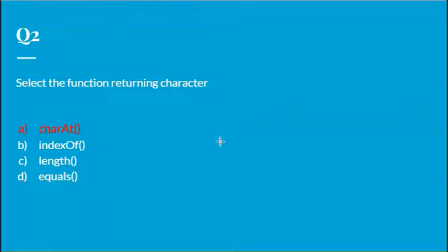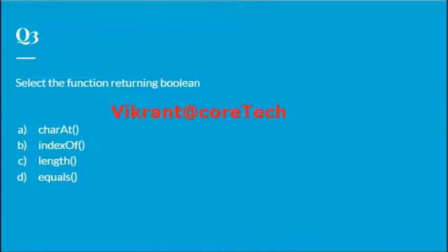The next one is name the function which can return the value boolean. So as per the explanation of the last one, the direct answer is equals.